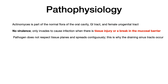When it comes to pathophysiology, Actinomyces has no virulence factors. Actinomyces is part of the normal flora of the oral cavity, the GI tract, and the female urogenital tract. Since it has no virulence factors, the question is how it causes infection — and the answer is: it only causes infection when there is tissue injury or a break in the mucosal barrier.